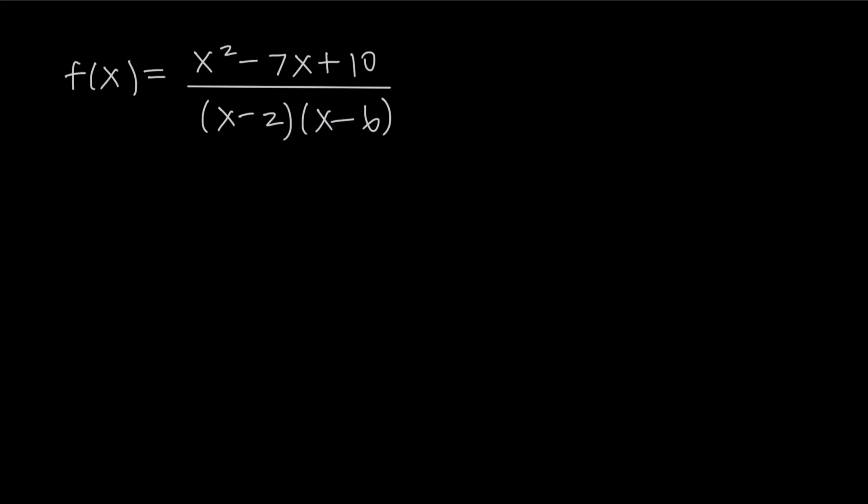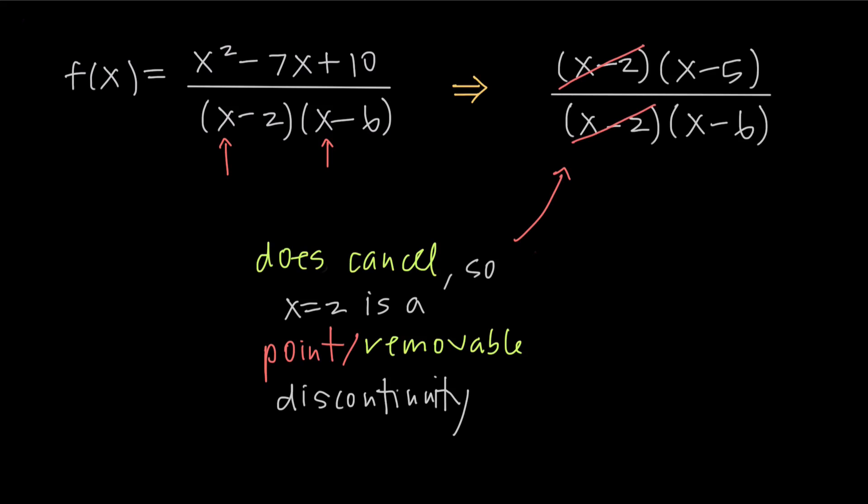If we take this rational function as an example, we can see that it'll have discontinuities at x equals 2 and x equals 6, because both of those values make the denominator 0. If we factor the numerator, we can cancel out the x minus 2, but not the x minus 6. Because we were able to remove the x minus 2, it means that x equals 2 is a point or removable discontinuity.